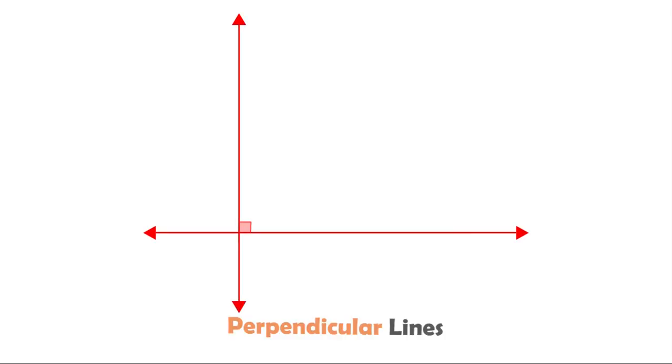When two lines meet at a certain point, we call these lines intersecting lines. And when the angle formed by the two intersecting lines is a right angle, we call those lines perpendicular lines.